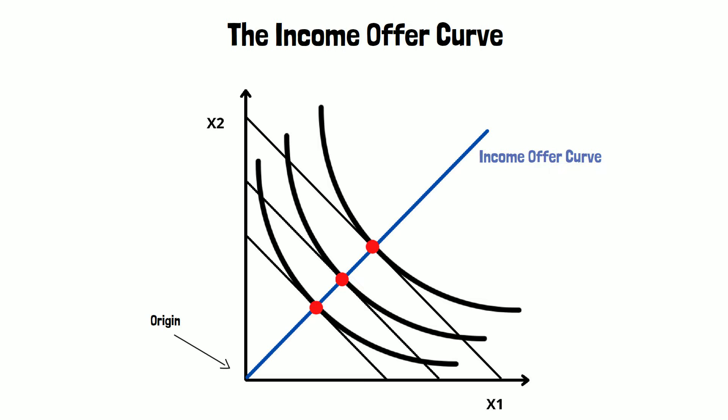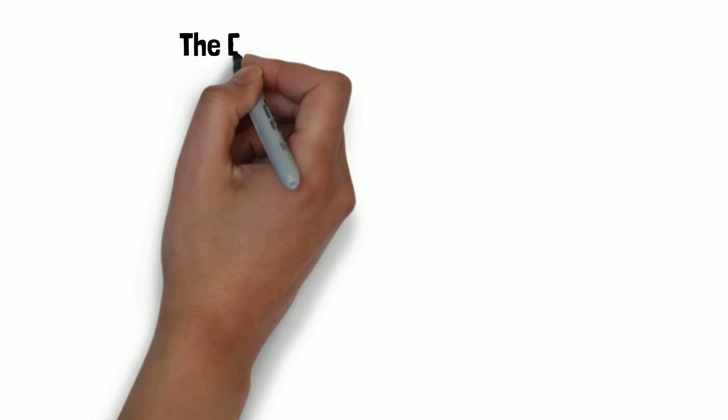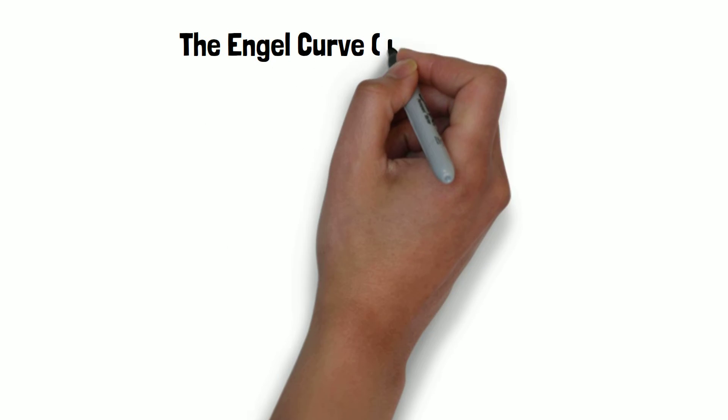The problem with the income offer curve is that we can only look at two goods at the same time without seeing the income level which is corresponding to the consumption bundles. To solve this problem we can take a look at the Engel curve.